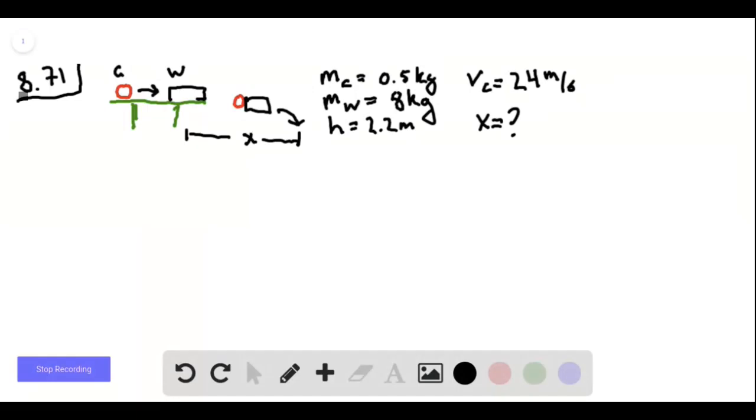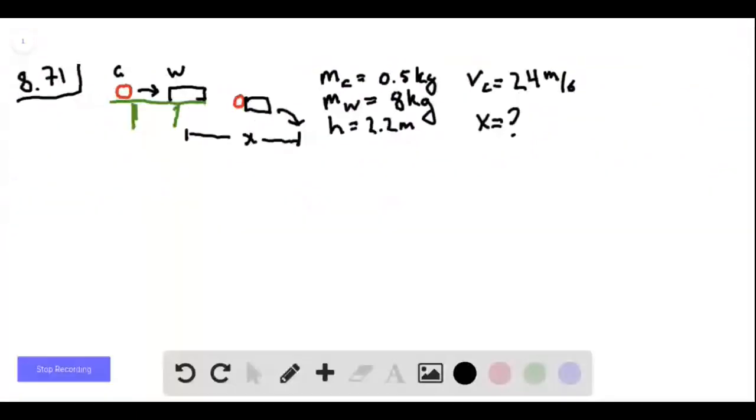So the clay comes along and hits the block of wood and sticks to it and knocks it off the table. And what we want to know is how great a horizontal distance will this combined object move before it hits the ground.